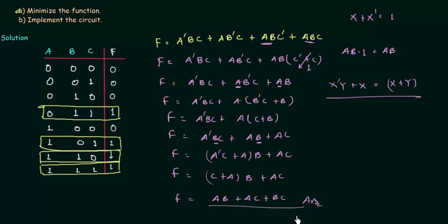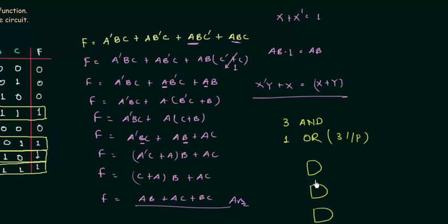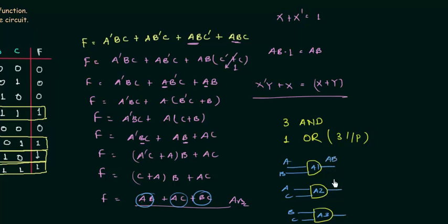Now we have to implement this circuit. We need three AND gates and one three-input OR gate. The first AND gate has inputs a and b. The second AND gate has inputs a and c. The third AND gate has inputs b and c. The outputs ab, ac, and bc are then fed into a three-input OR gate to obtain function f.